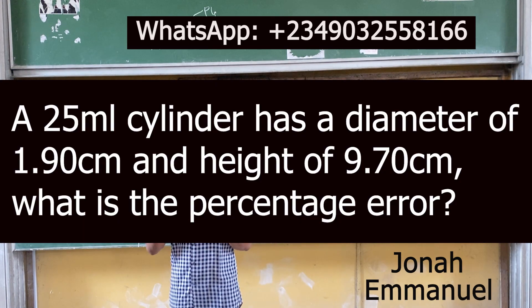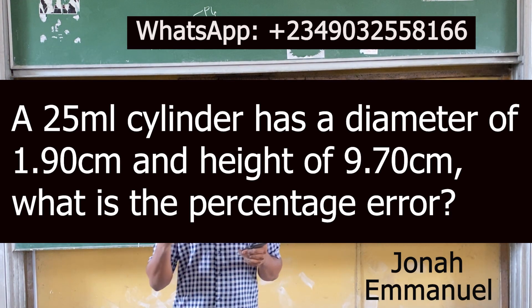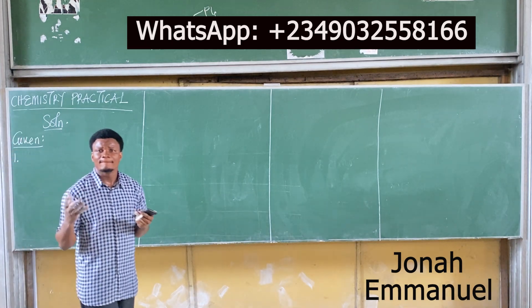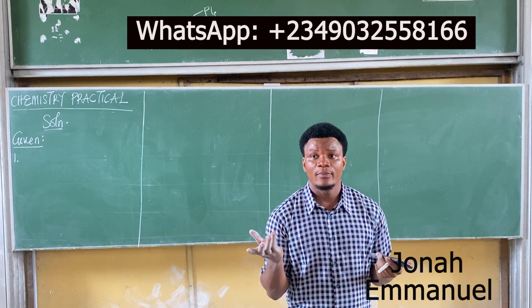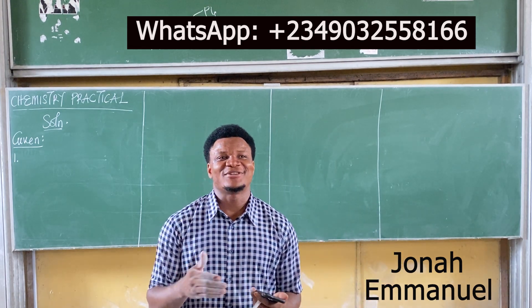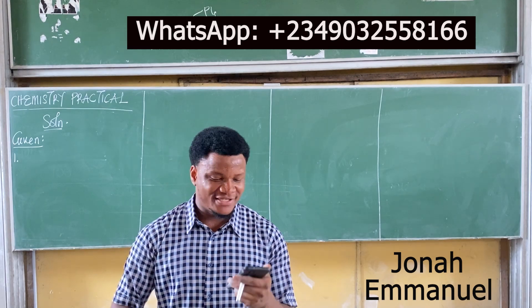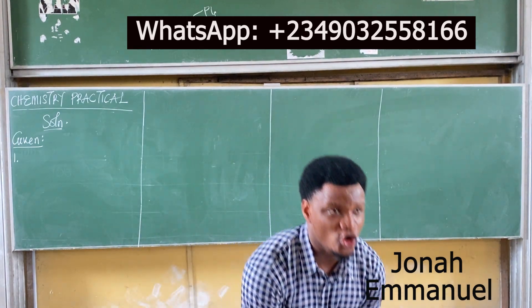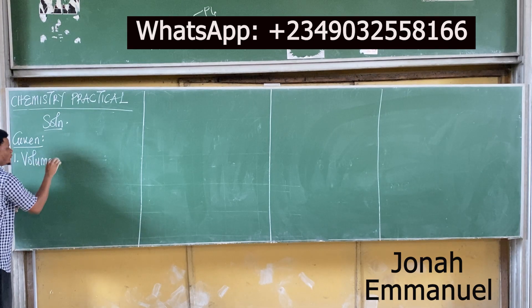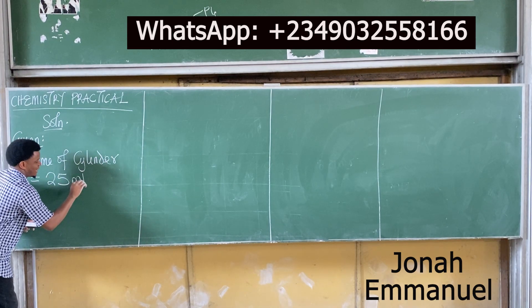Sample question 4. A 25 ml cylinder has a diameter of 1.90 cm and a height of 9.70 cm. What is the percentage error? First, let's list the given parameters. The first given is volume of cylinder: 25 ml. That's the first step.